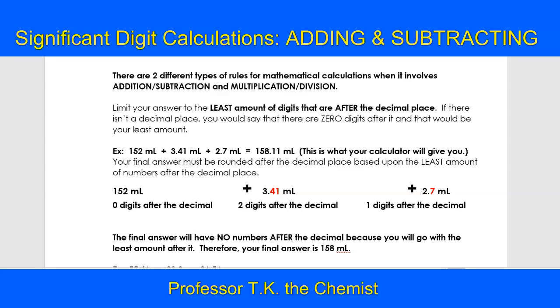Now when you add those numbers up the traditional way with your calculator, you get 158.11, but the rule says you're going to go with the least amount of digits that come after the decimal place.